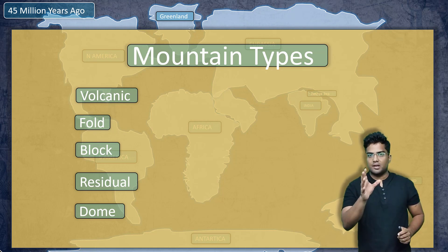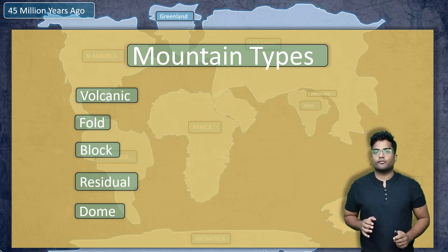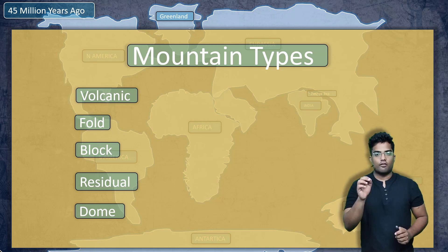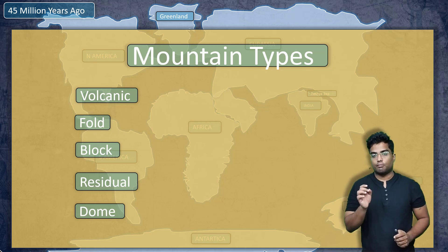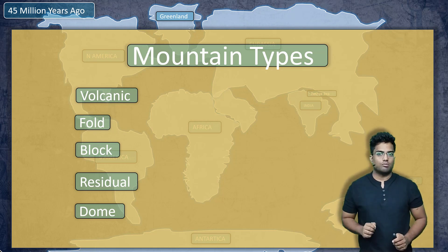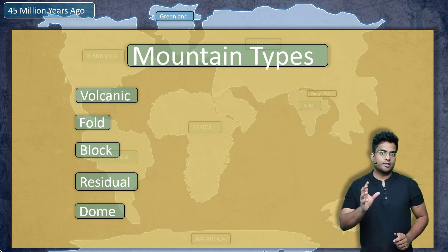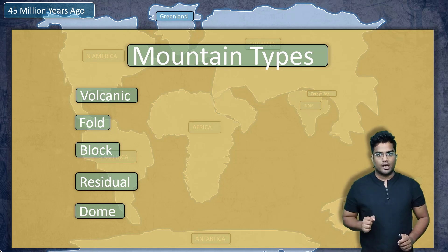As you can see, there are many different types of mountain types. We have volcanic, we have fold, we have block, we have residual, and we have dome. So these are essentially the five important mountain types.